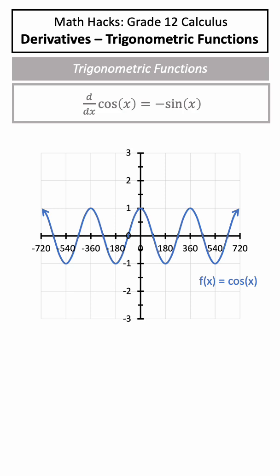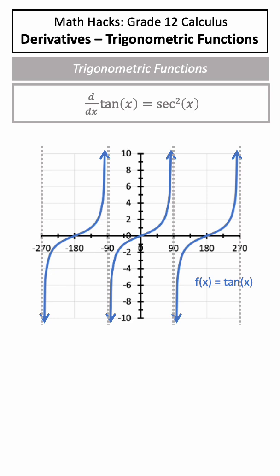The same technique can be used on cos of x to show that the derivative is negative sine of x. And a similar technique can be used on tan of x to show that the derivative is secant squared of x.